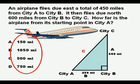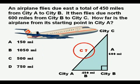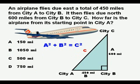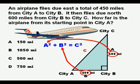And so, we find C by using the Pythagorean Theorem, A squared plus B squared equals C squared. And we substitute, in this case, we substitute 600 for A and 450 for B.